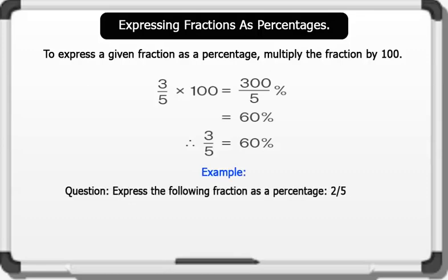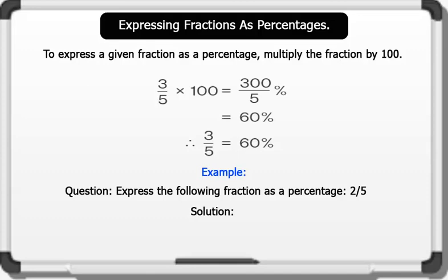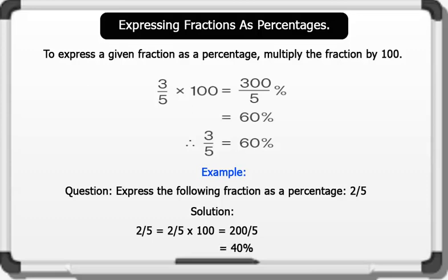Let's see another example. Question: Express the following fraction as a percentage — 2 over 5. Solution: Multiply the fraction by 100. 2 over 5 times 100 equals 200 divided by 5. This gives us 40%. That's awesome!